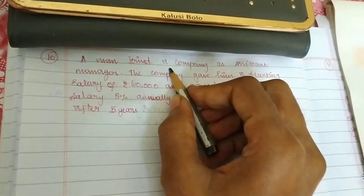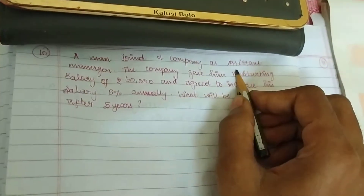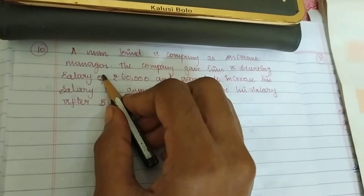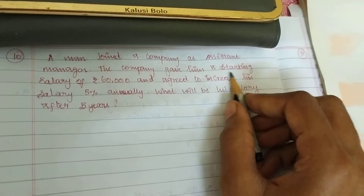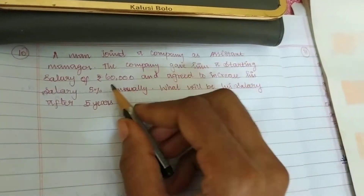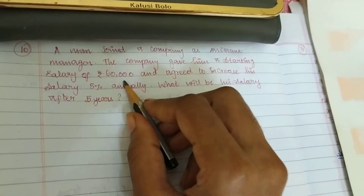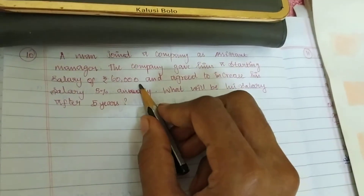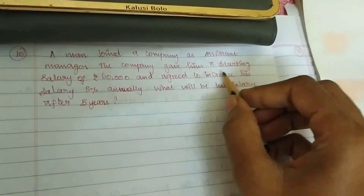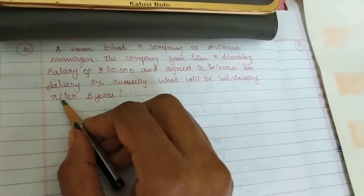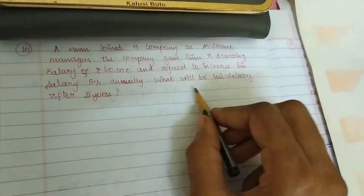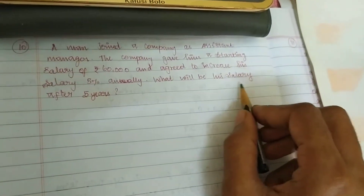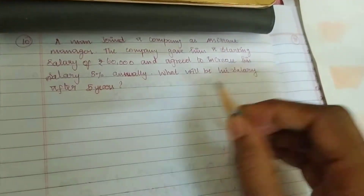Question. A man joined a company as assistant manager. The company gave a starting salary of 60,000 and agreed to increase his salary 5% annually. So what will be his salary after 5 years?